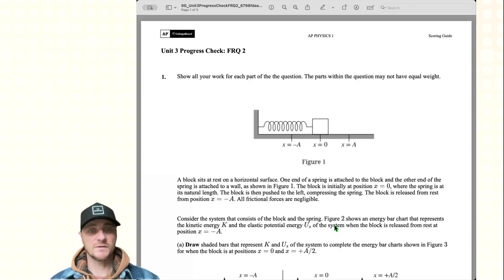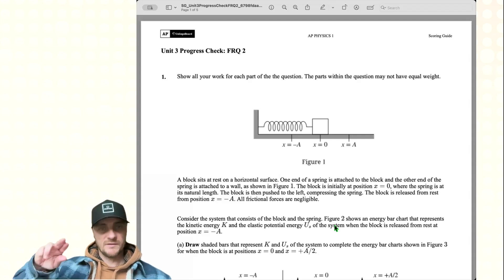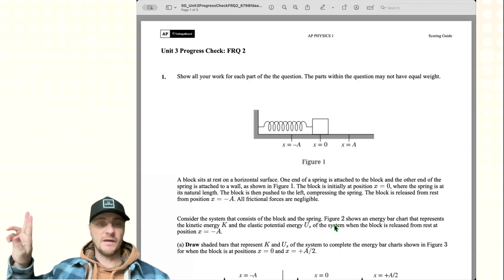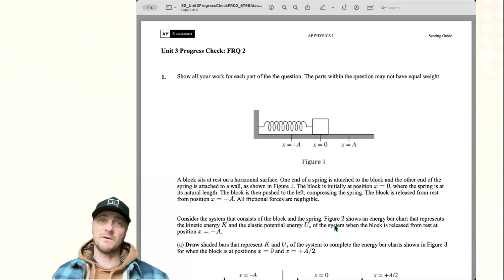A block sits at rest on a horizontal surface. One end of the spring is attached to the block and the other end is attached to a wall. The block is initially at position x equals 0 where the spring is at its natural length. The block is then pushed to the left, compressing the spring, and released from rest from position x equals negative a. All frictional forces are negligible.